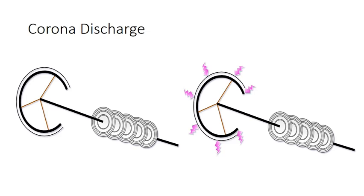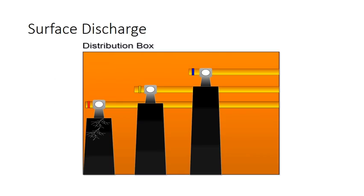Corona discharge occurs around sharp high voltage conductors and is normally visible in the form of a purple glow. Surface discharge occurs at the boundary of different insulation material.